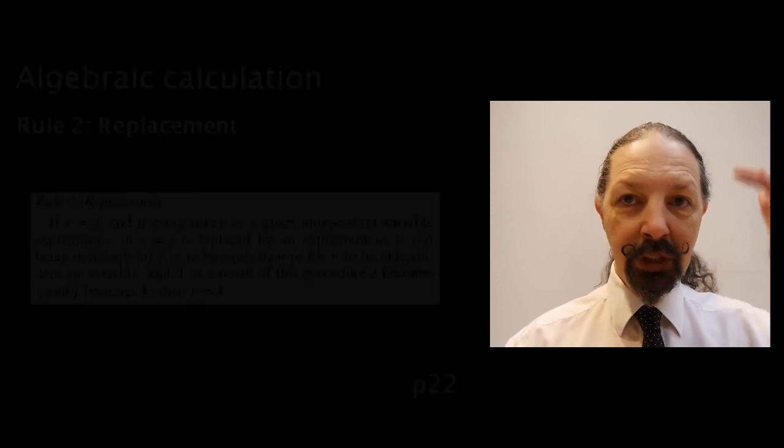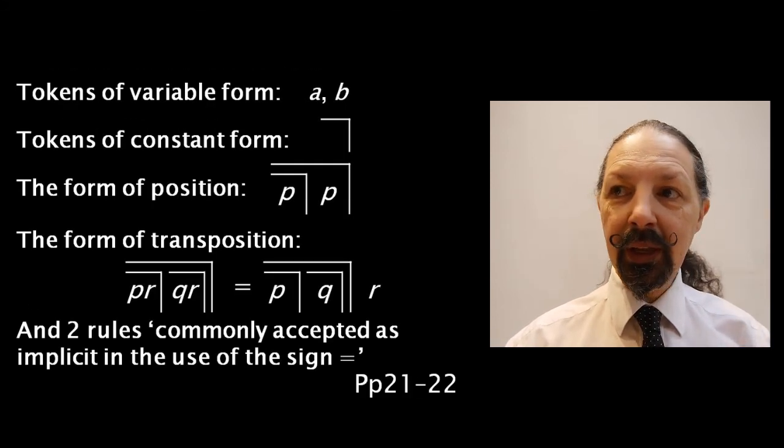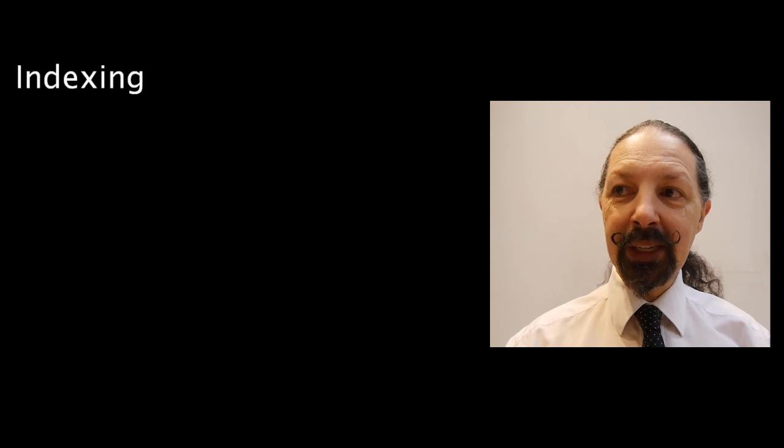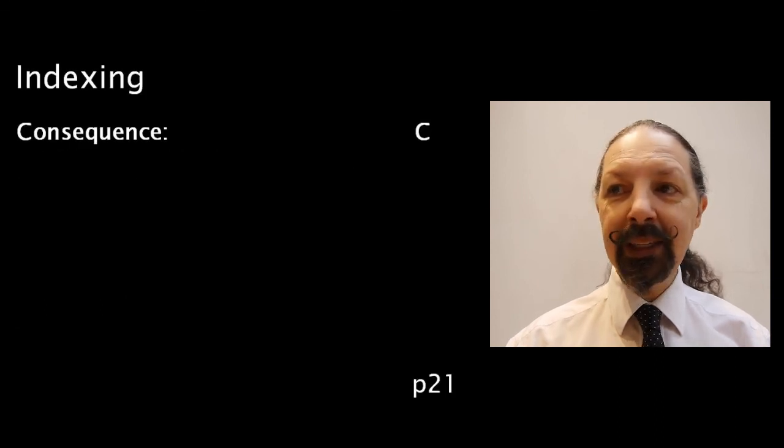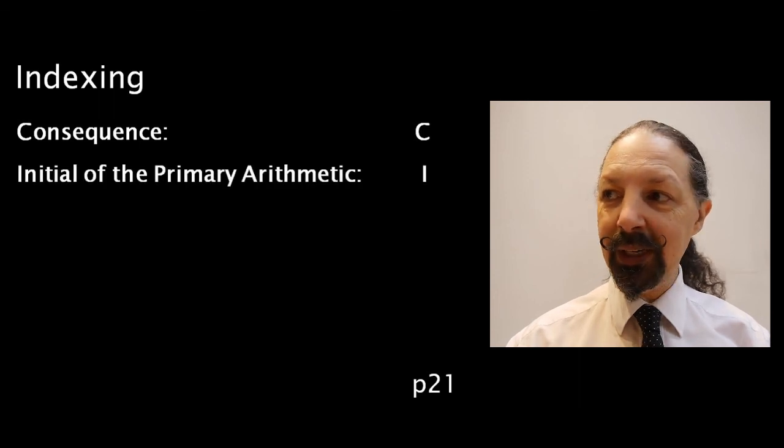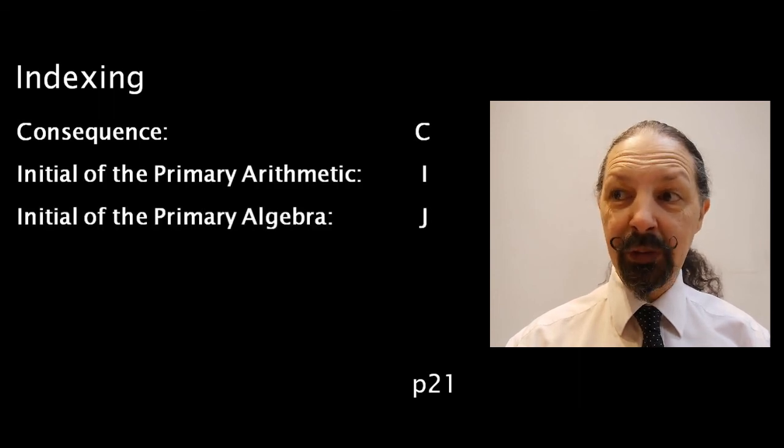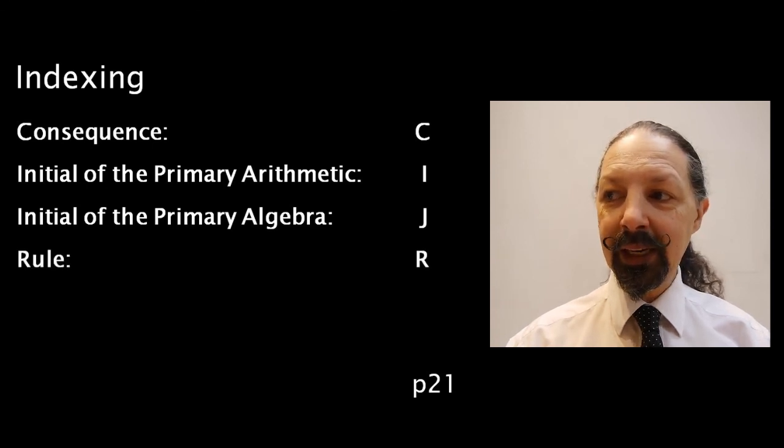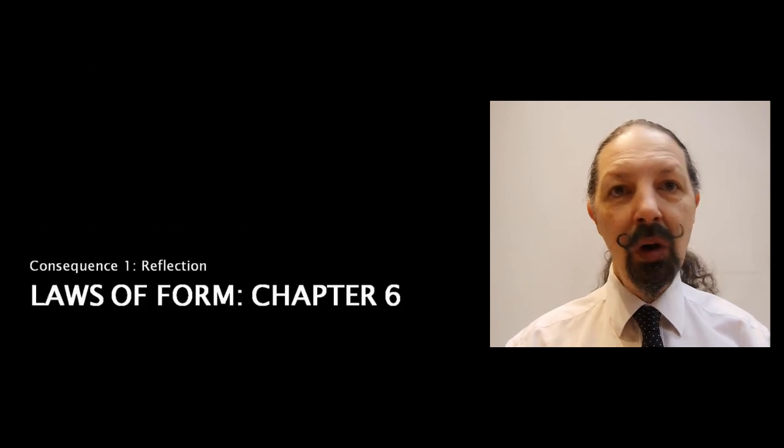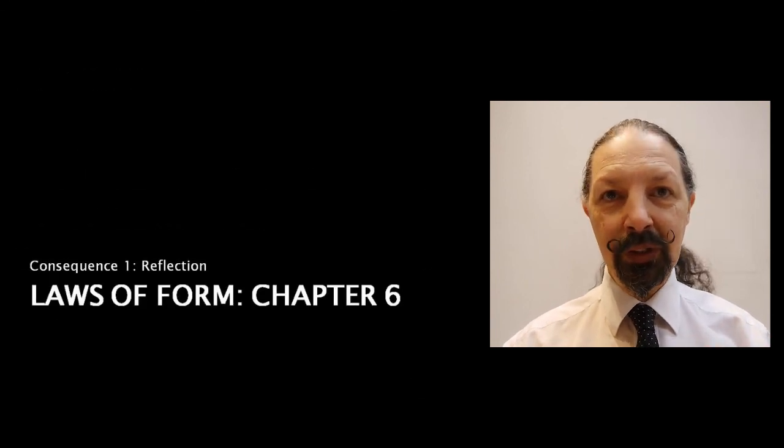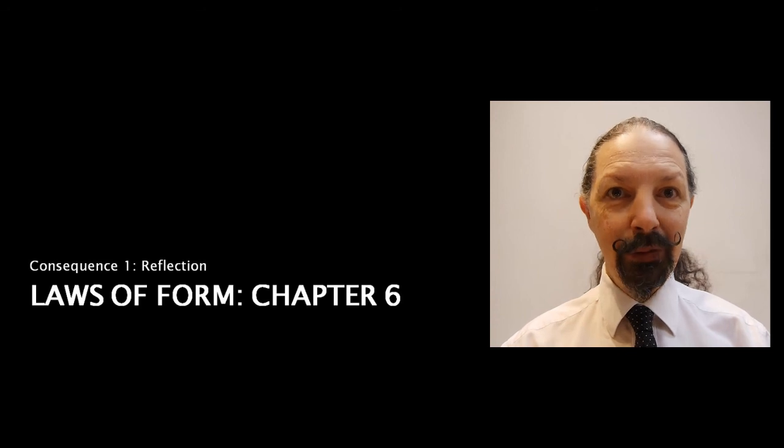Now we're going to use all of these and a system of indexing he uses where C stands for consequence, I stands for an initial of the primary arithmetic, J stands for an initial of the primary algebra, R stands for rule, and T stands for theorem in our next session where we start looking at consequences. I look forward to seeing you then.